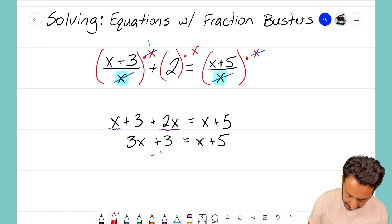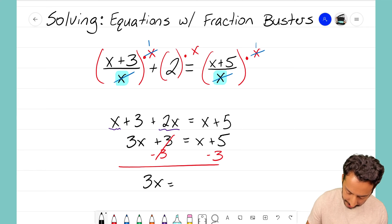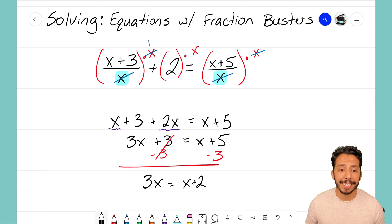I think I want to move that 3 over to the left hand side, so I'm going to subtract 3 on both sides. I'm left with just 3x equals x, 5 minus 3, that makes 2, a positive 2.